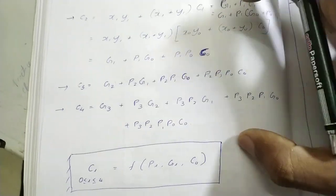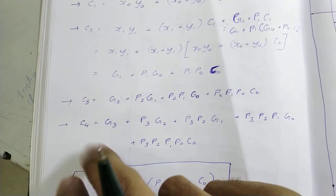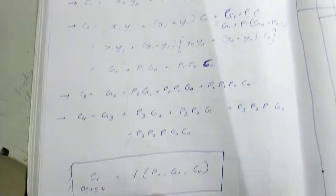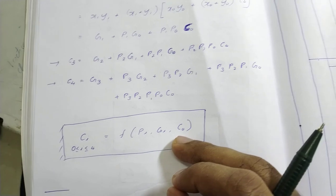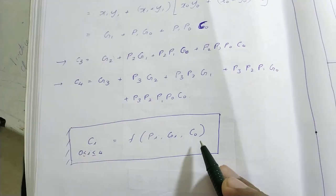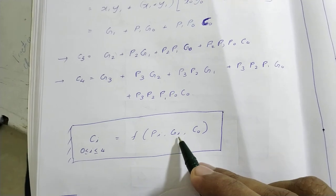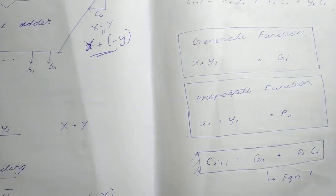So what have we done here? We have essentially gotten all the carries in terms of pi's, gi's, and c0. c0 we already have. gi's and pi's are all calculated using xi and yi. All the xi's and yi's we have.